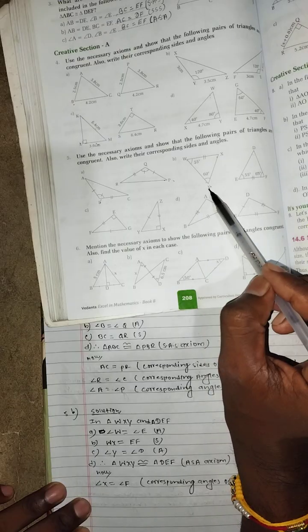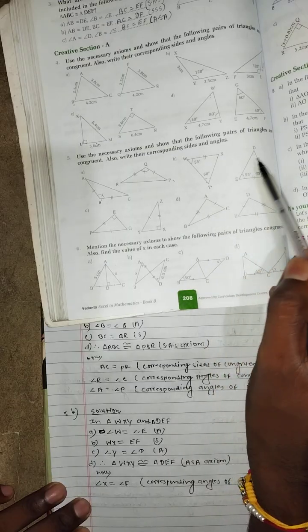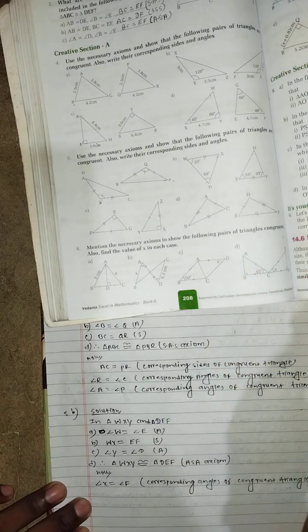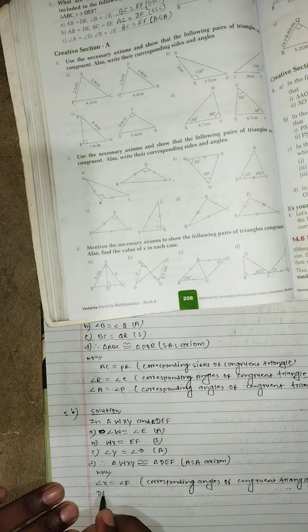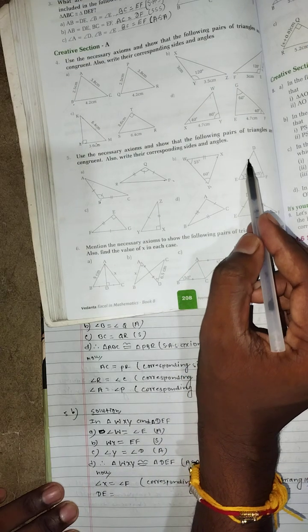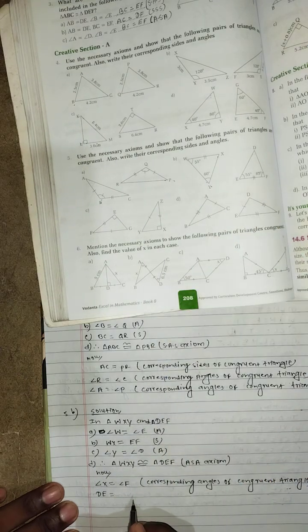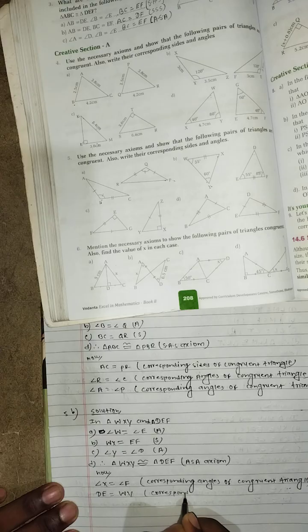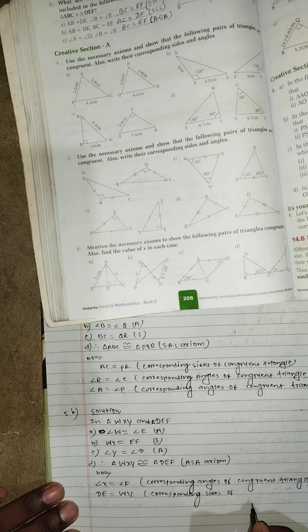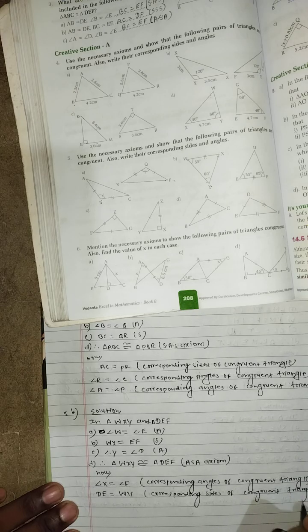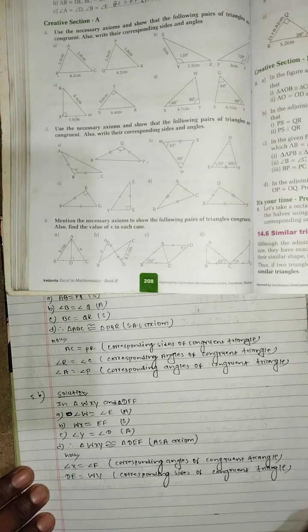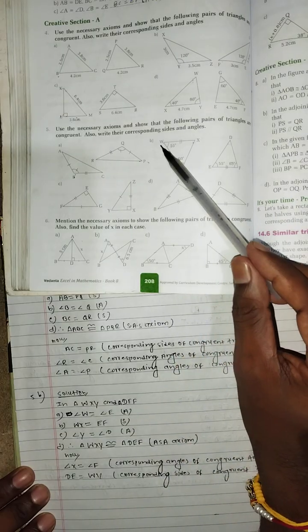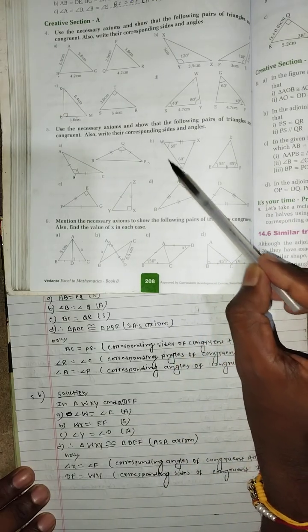WY corresponds to DE, WY equals DE; corresponding side of congruent triangle.